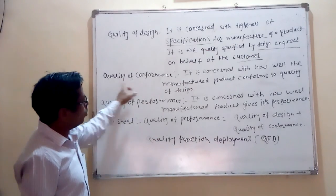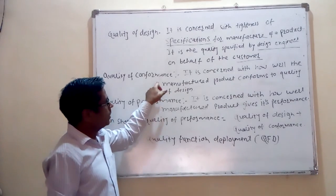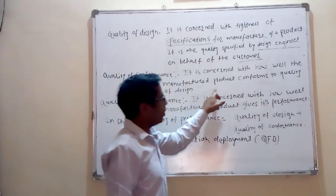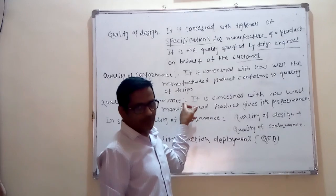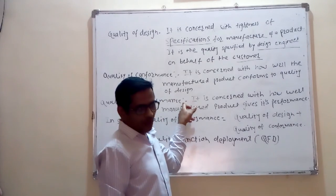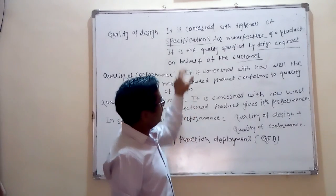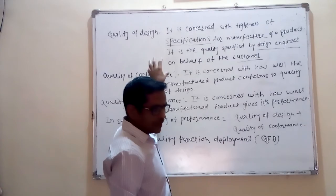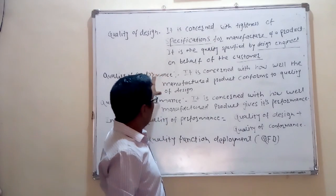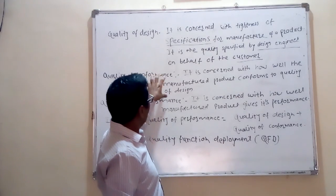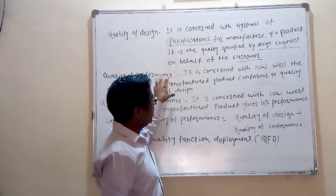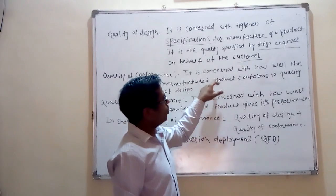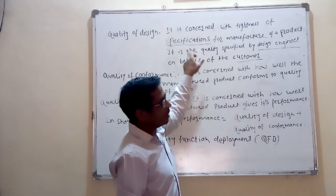Now, what is quality of conformance? It is concerned with how well the manufactured product conforms to quality of design. The design engineer has given the quality of design, and the manufacturer engineer or production engineer produces the product. He should produce it strictly as per the design.